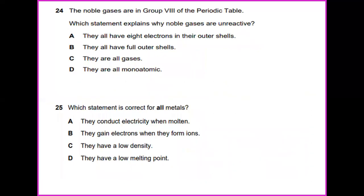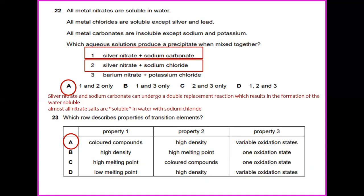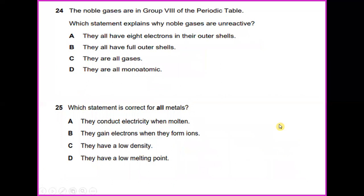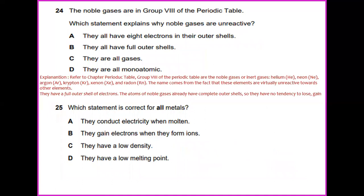Which row describes properties of transition elements? Properties of transition elements include colored compounds, high density, and variable oxidation state. The noble gases are in group 8 of the periodic table. Which statement explains why noble gases are unreactive? Refer to chapter on periodic table, group 8 of the periodic table are the noble gases or inert gases. Examples are helium, neon, argon, krypton, xenon, and radon. The name comes from the fact that these elements are virtually unreactive towards other elements.